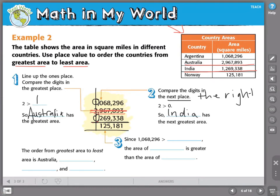So, we have taken care of this country as well. Now, we have two countries left that we are comparing. The countries that we have left are Argentina and Norway. Now, I can see here Argentina has a digit in the millions place, but Norway does not.